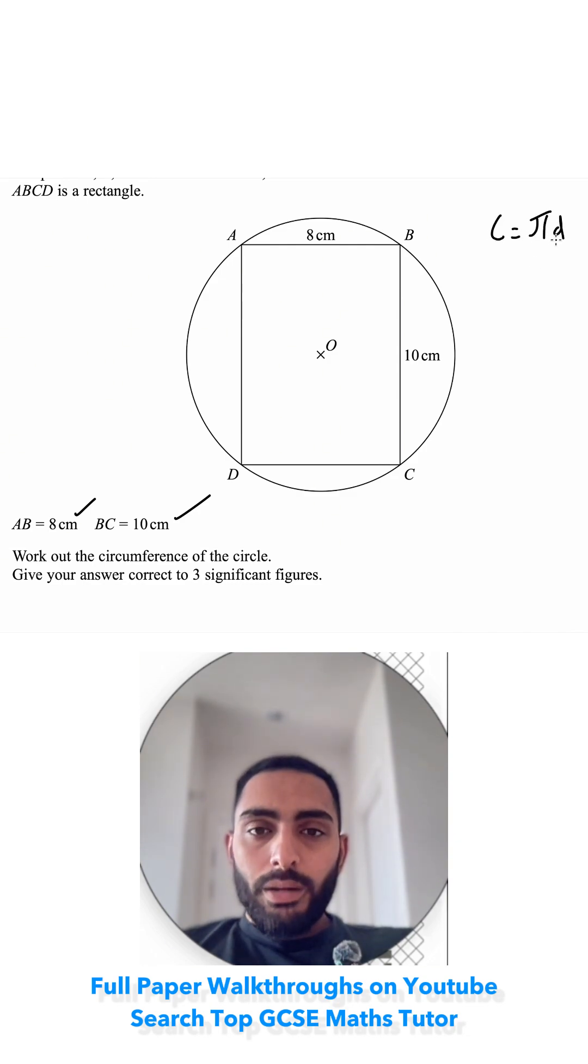So we need to try and find the diameter. I'm going to draw my diameter from one corner of the rectangle to the other corner of the rectangle because I think I could find out that length. This base is also going to be 8 centimeters and that height is 10 centimeters. And because it's a rectangle that's going to be a right angle.